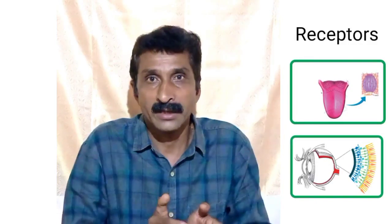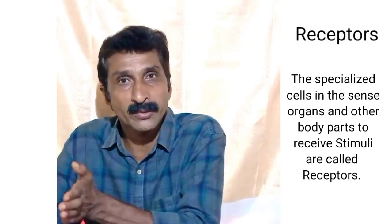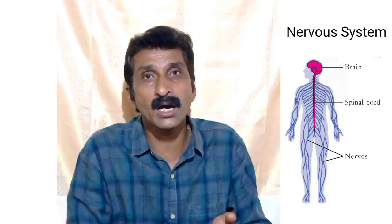In all sense organs, specialized cells are there to receive the stimuli. These specialized cells responsible to receive the stimuli are called as receptors. These receptors receive the stimuli and send messages to the brain through various nerves. The brain helps us to identify or experience different types of senses. The nervous system consists of mainly three important parts: the brain, the spinal cord, and the nerves.